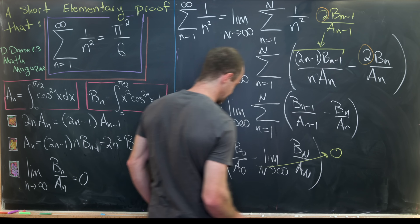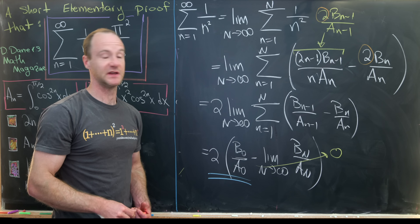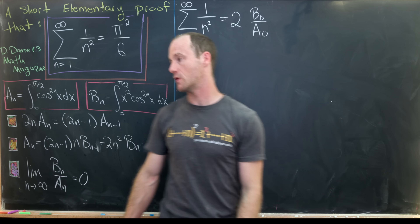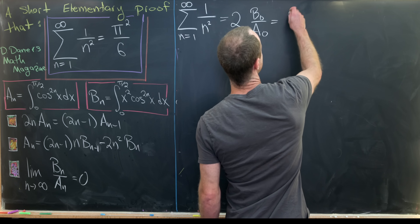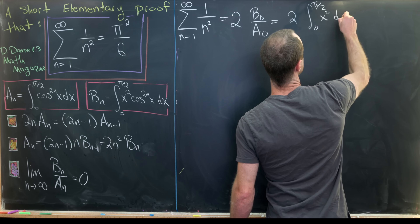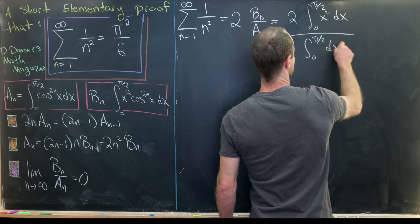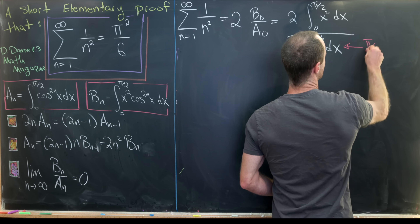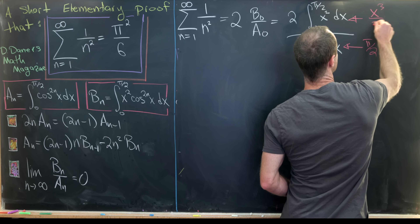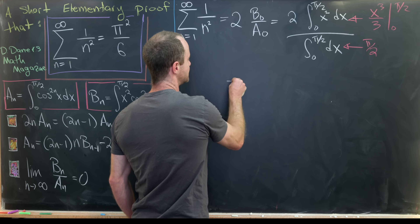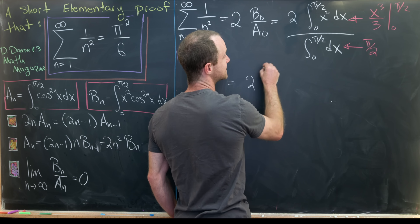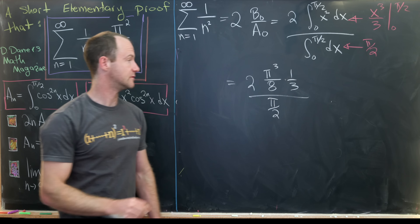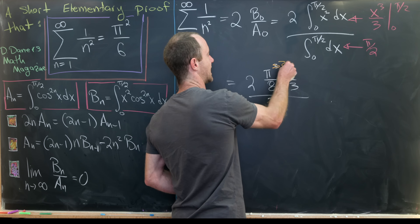We just proved that lim b_N/a_N = 0, so our sum equals 2·b_0/a_0. Calculating: b_0 = ∫₀^{π/2} x² dx = [x³/3]₀^{π/2} = π³/24, and a_0 = ∫₀^{π/2} dx = π/2. So the sum is 2 × (π³/24) / (π/2). The π cancels to give π², and simplifying 2 × (1/24) / (1/2) = 2 × (1/12) = 1/6, yielding 2·(π²/24)·(2/π) = π²/6.